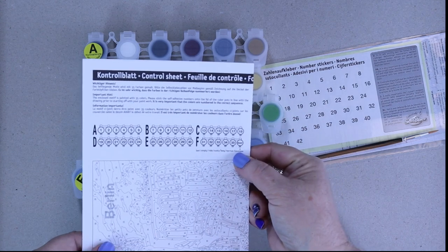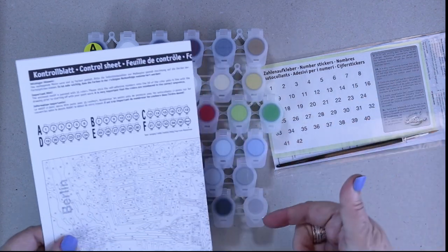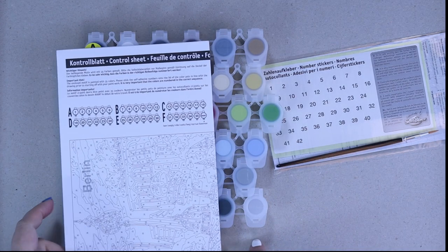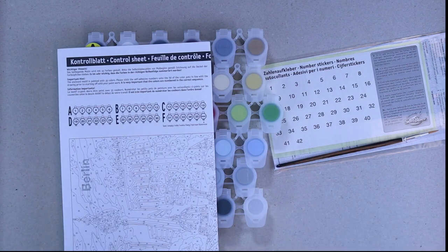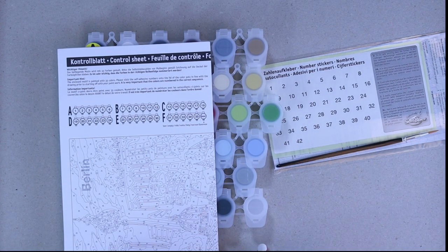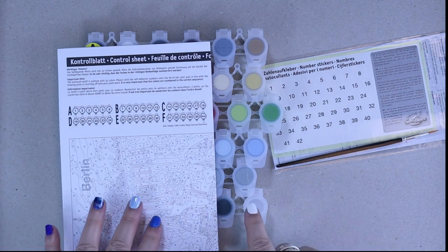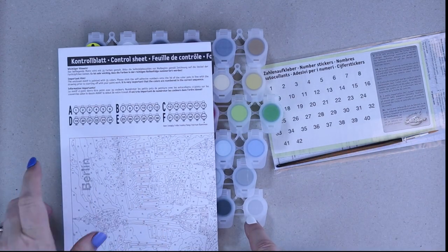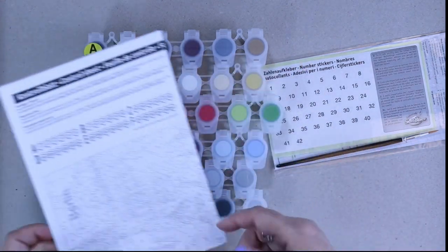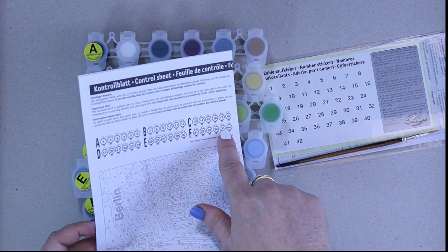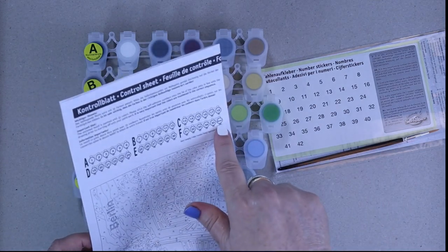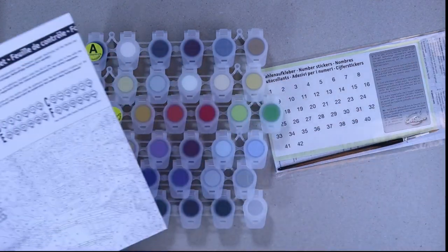I notice there is an empty paint pot here and it does specify 'leer' which means empty. They even give you the translation. For me, I love this - if you happen to want to use that paint pot for anything, you can. If you want to put a little mixture of something in there, it's there for you. This is always important to make sure you're paying attention for duplicates, so if you have an extra 24, you don't just go bam bam and start labeling everything.